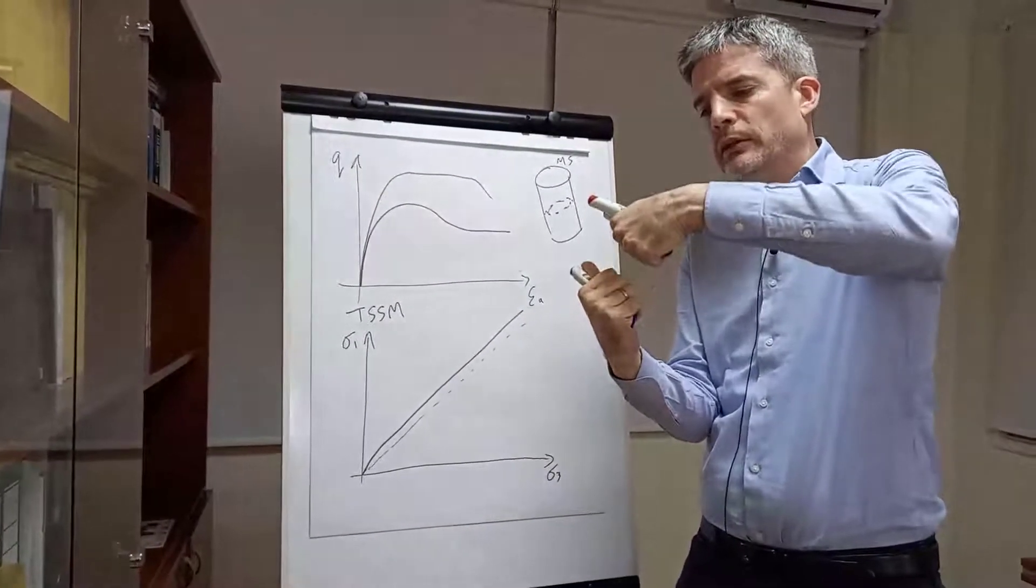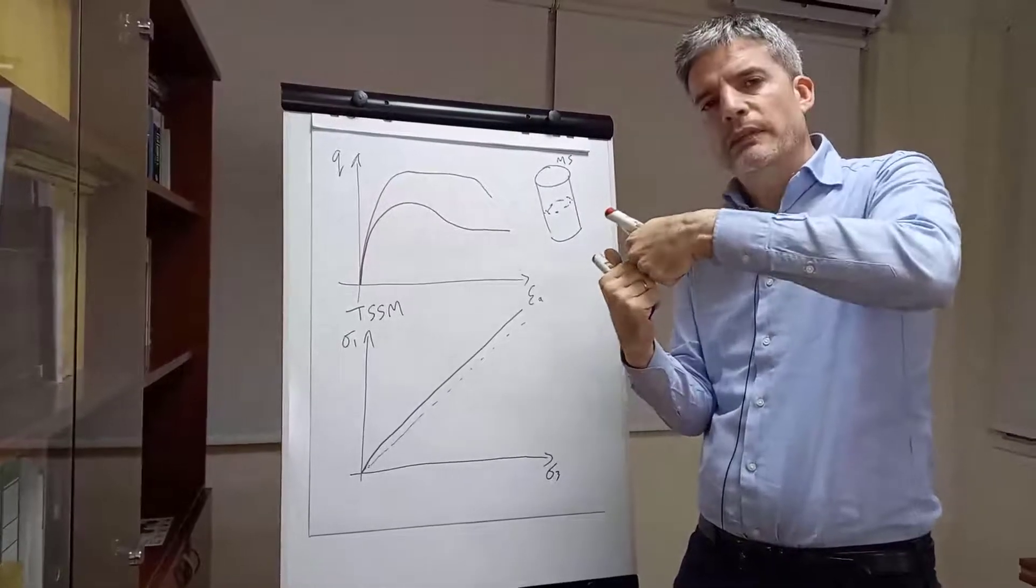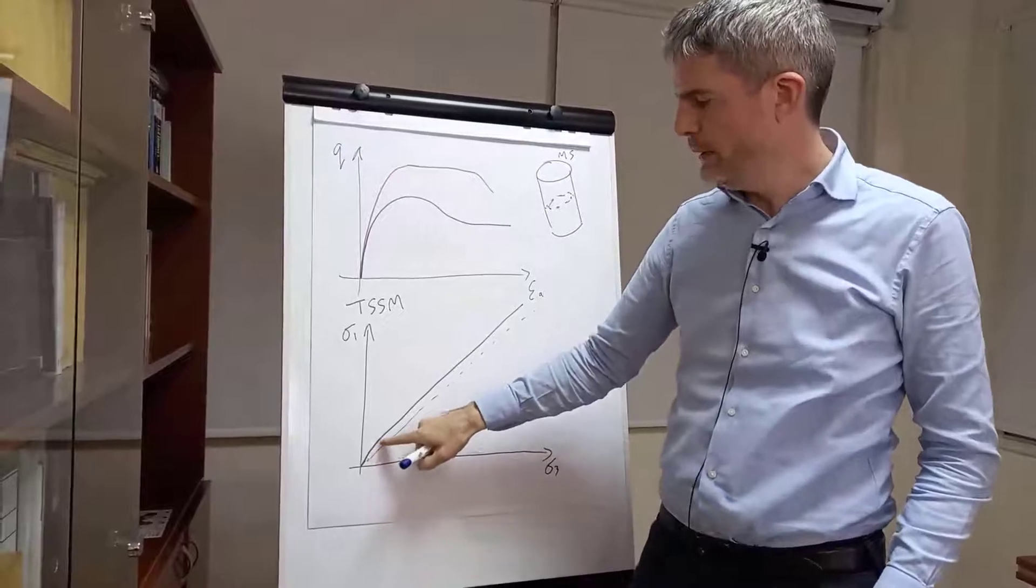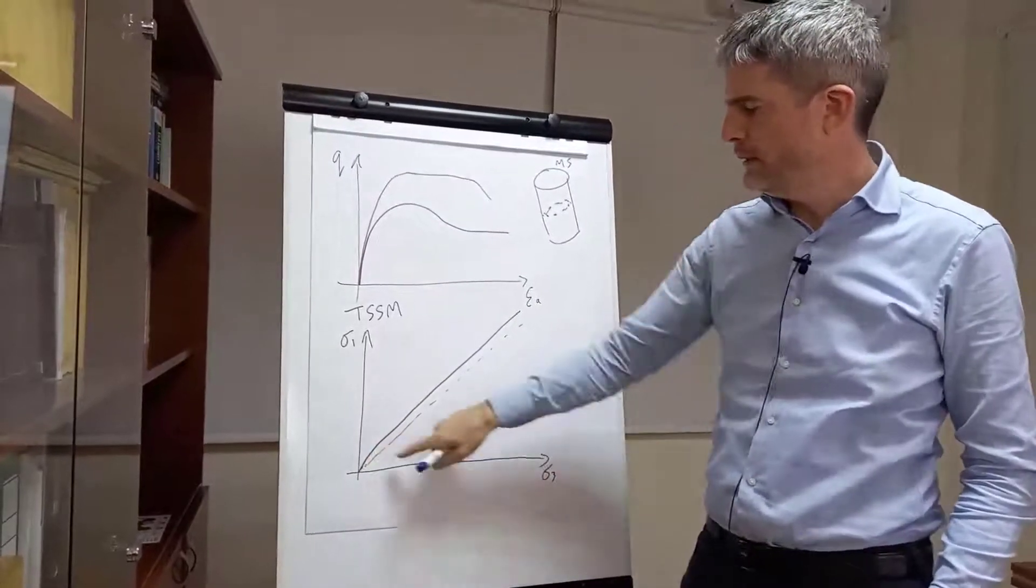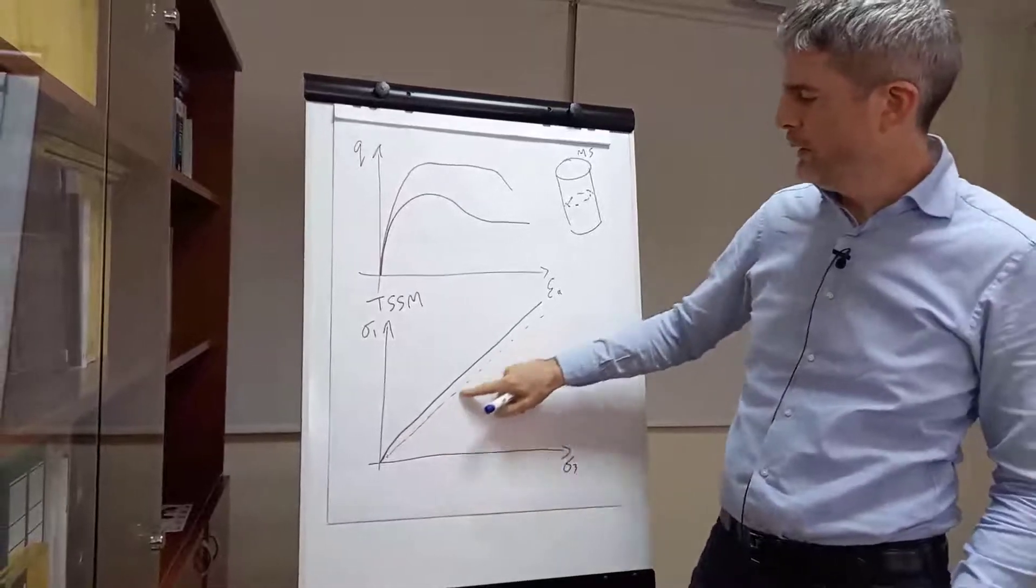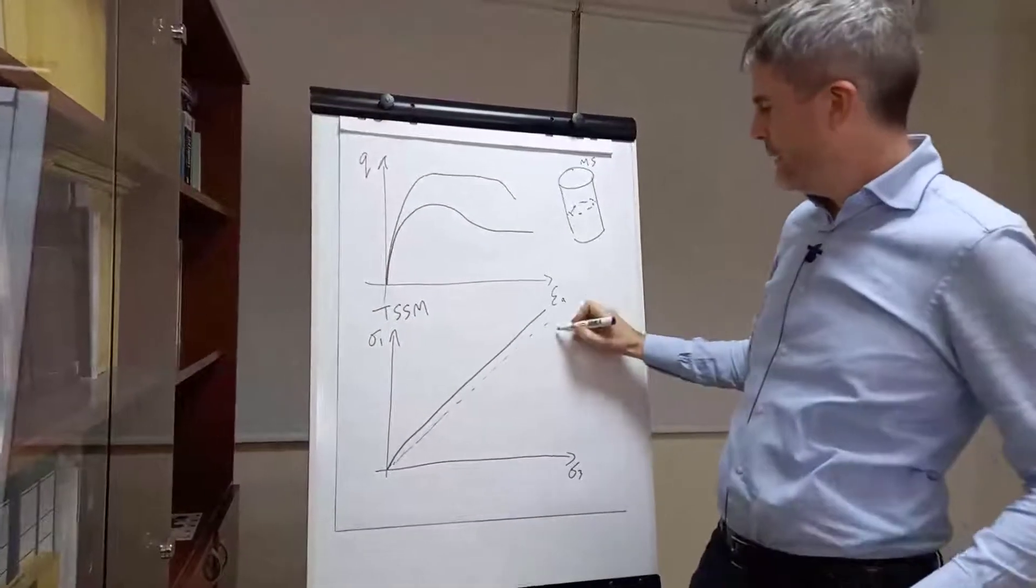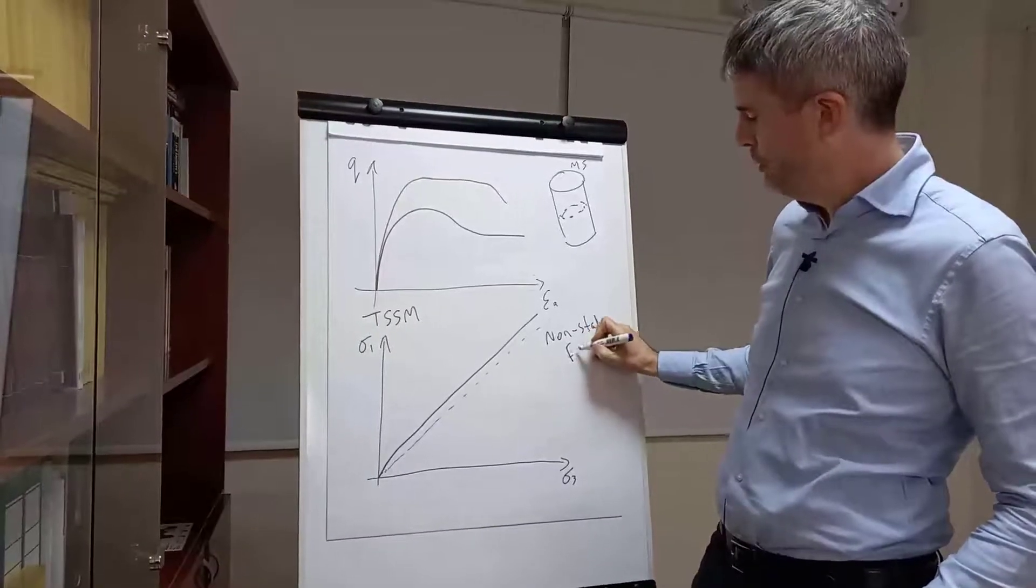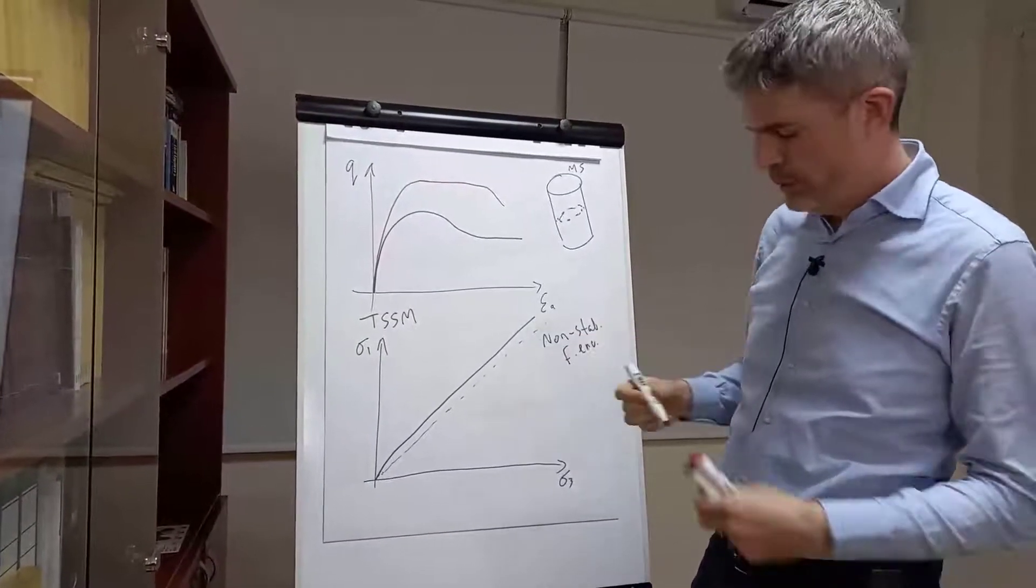That requires a little bit of energy to cause that, and that's what causes that curvature there and that little bit of extra strength above the frictional envelope. So, that's the non-stabilized failure envelope in blue.